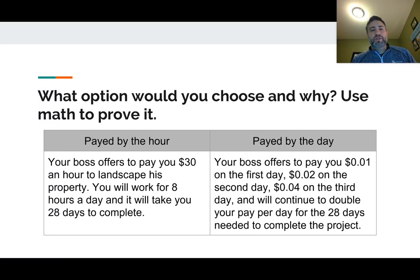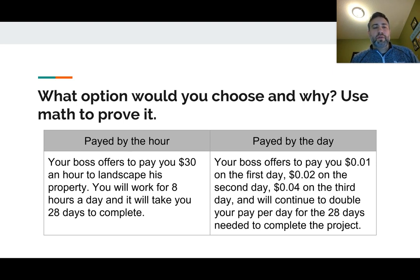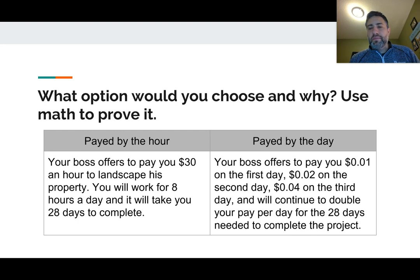Here's our last slide: what option would you choose? Use math to prove it. You're paid by the hour — your boss offers you $30 an hour to landscape a property. You'll work 8 hours a day and it'll take 28 days to complete. Or you can choose to be paid one cent for the first day, two cents for the second day, four cents the third — essentially doubling your pay every day for 28 days. Try this problem and maybe when we get together for math meet time, you can talk to me about which option you think is better. Thanks for watching today.